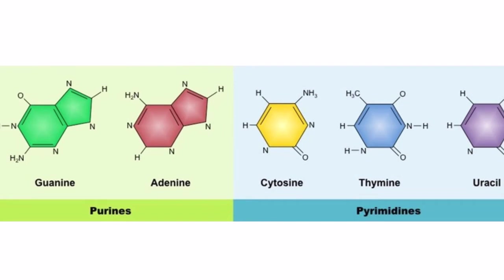We already know that we have two types of bases. One is Purine and the second is Pyrimidines. In Purines we have adenine and guanine, and in Pyrimidines we have cytosine, uracil and thymine.